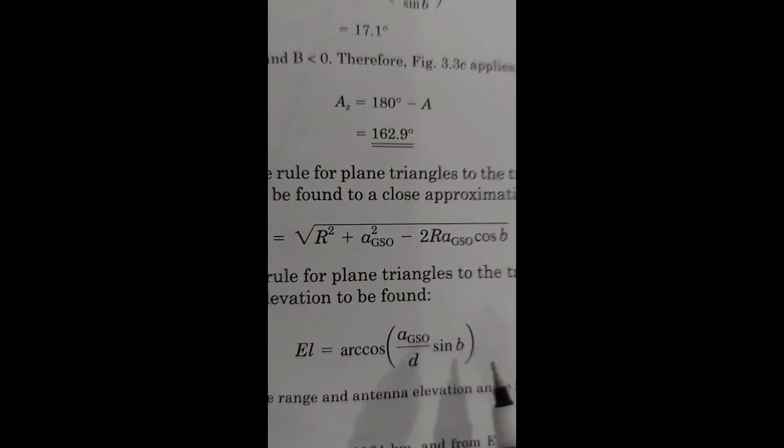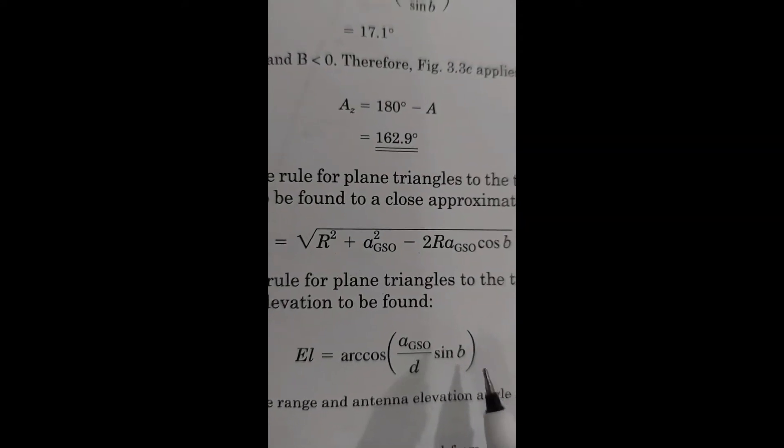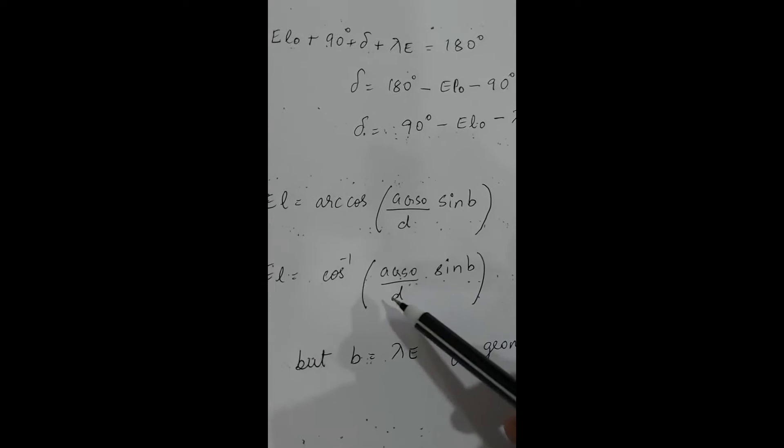We know the expression for the angle of elevation: el equals cos inverse of (AGSO / d) times sin(b). This is the expression we already know — elevation equals cos inverse of (AGSO / d) times sin(b). Here we are finding the elevation when the satellite position is due south of the earth station. Under that condition, instead of calling it just the angle of elevation, we call it el_naught.